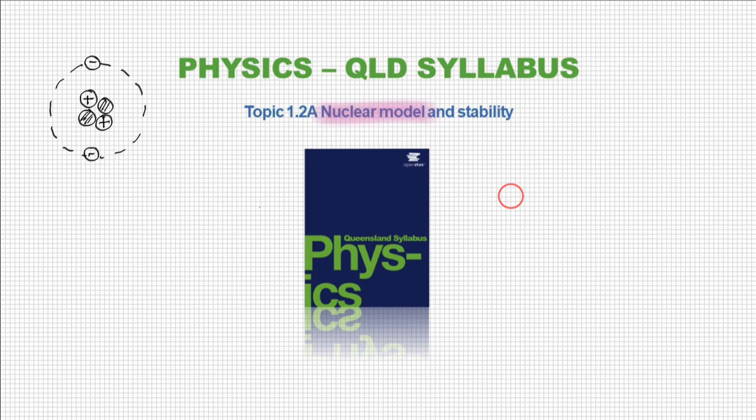Here's the classic model of the atom that you've probably been used to seeing since late primary school years, early high school years. We have our nucleus and we have our electrons orbiting. We're going to focus on the nucleus here and call the particles in the nucleus nucleons.